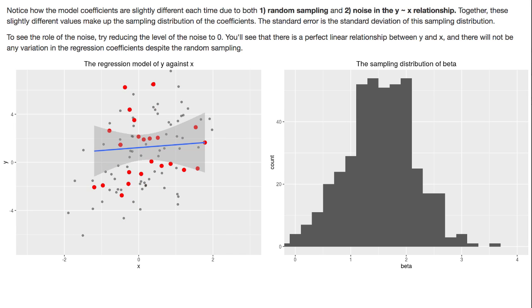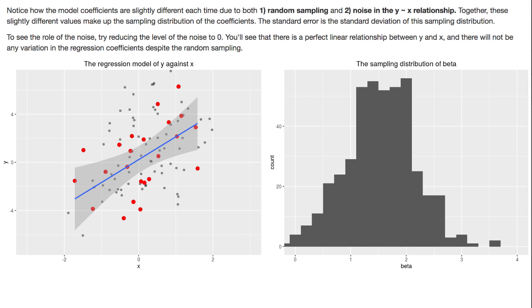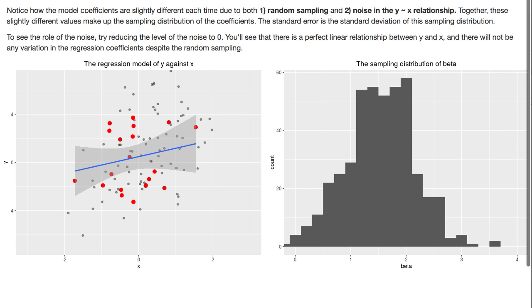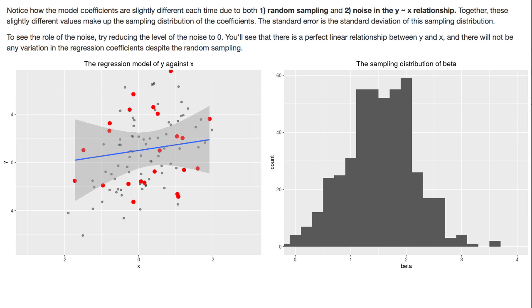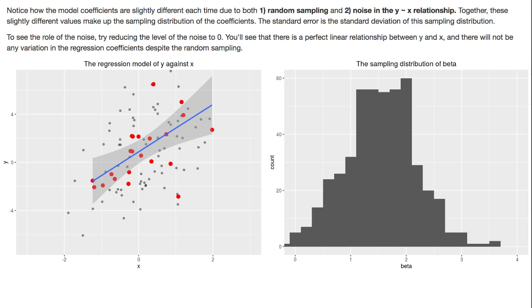What you can see here is as you take different samples you get different estimates of the regression parameters or the linear model parameters, and they have a distribution. So some samples will give us beta values very very close to the true value, remember the true value was 2, so some of our samples have given us estimates close to 2, and some of our samples have given us estimates quite far from 2.